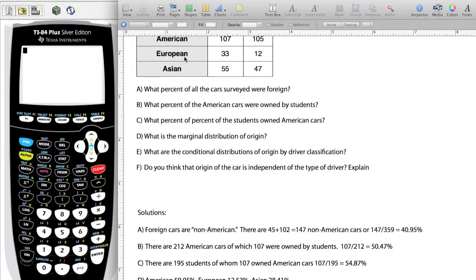We total up the European and Asian cars. We find that the marginal sums, there's 359 cars total. And so when we divide the sum by 359, you get 40.95%.